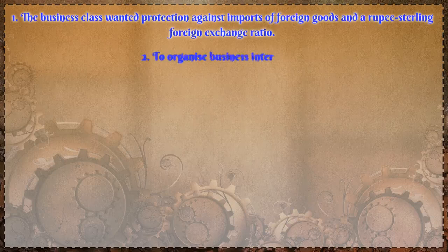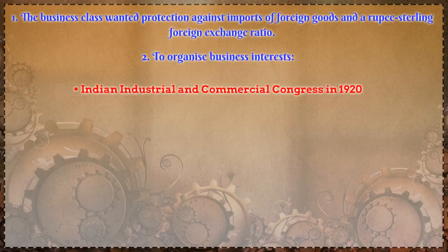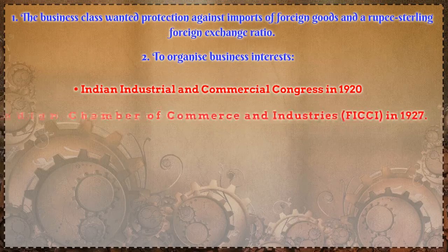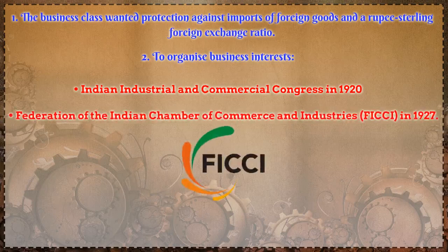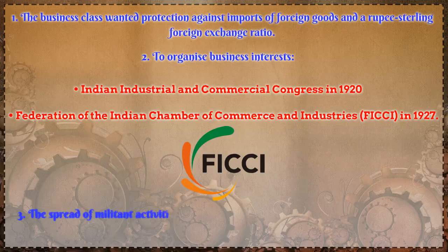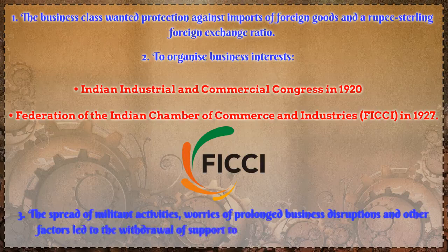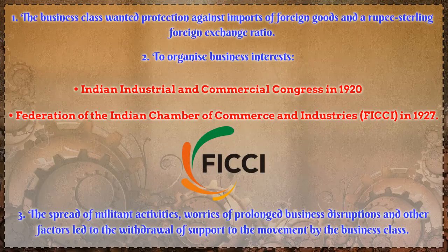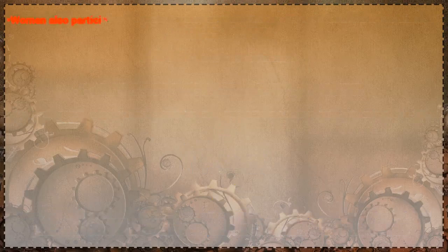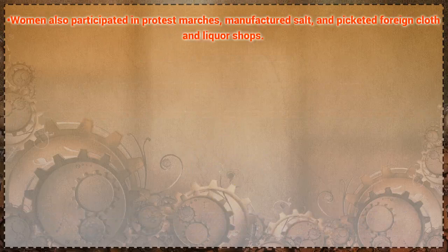The business class wanted protection against imports of foreign goods and a rupee-sterling foreign exchange ratio that would discourage imports. To organize business interests, they formed the Indian Industrial and Commercial Congress in 1920 and the Federation of the Indian Chamber of Commerce and Industries in 1927. However, the spread of militant activities, worries of prolonged business disruptions, growing influence of socialism amongst young Congress members, and the failure of the Round Table Conference led to the withdrawal of support to the movement by the business class.